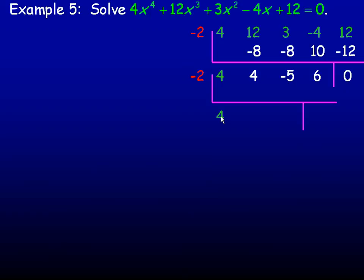Bring the 4 down. And negative 2 times 4 is another negative 8. 4 and negative 8 add to negative 4. Negative 4 times negative 2 is positive 8. We can add positive 8 this time. Negative 5 and 8 add to 3. And 3 times negative 2 is negative 6. And so that adds to 0. Remainder 0 again.